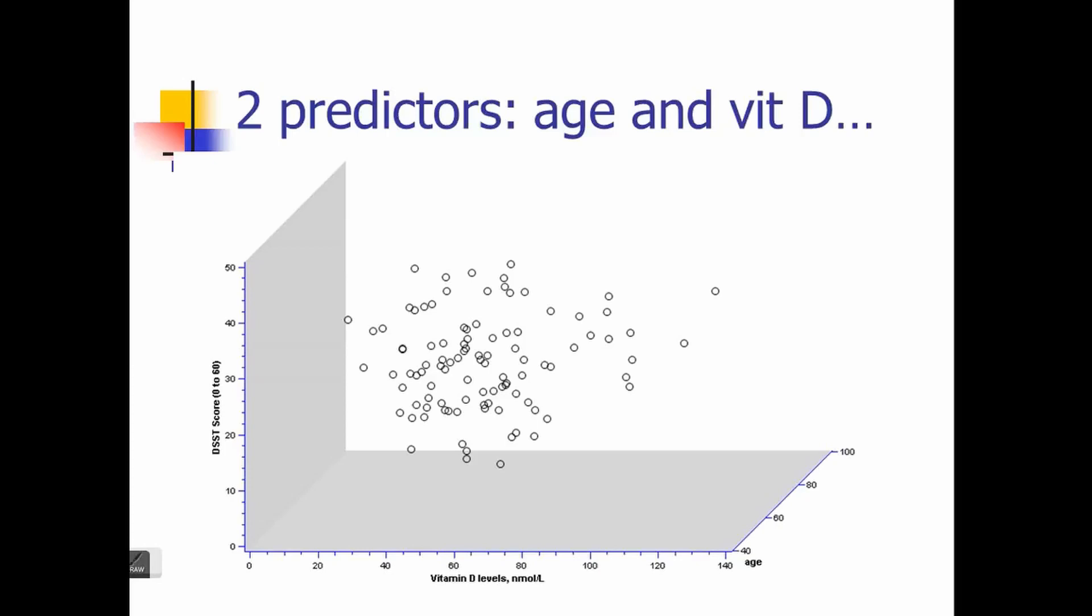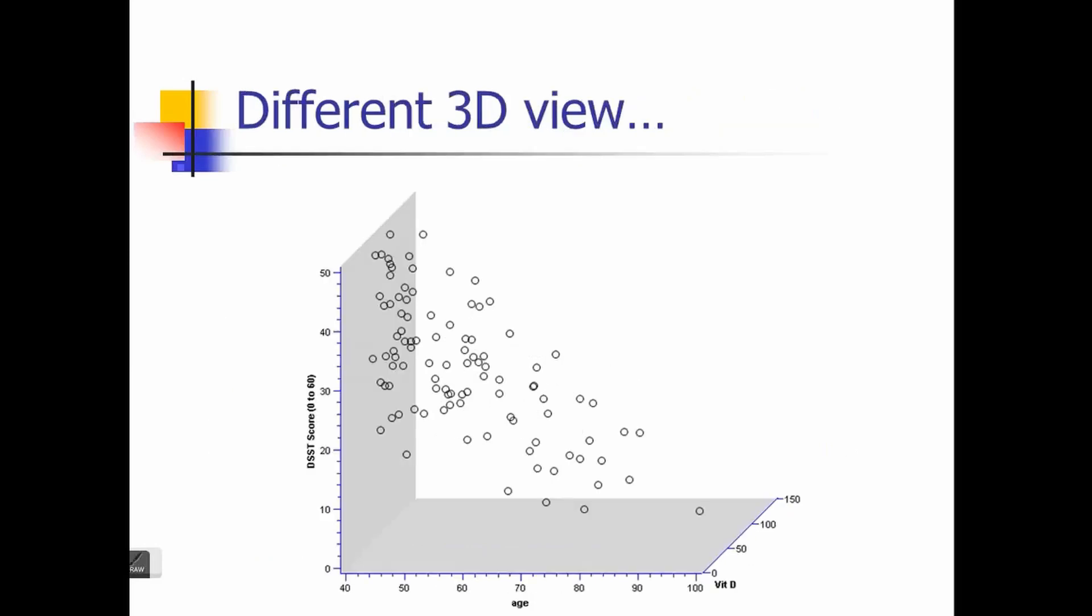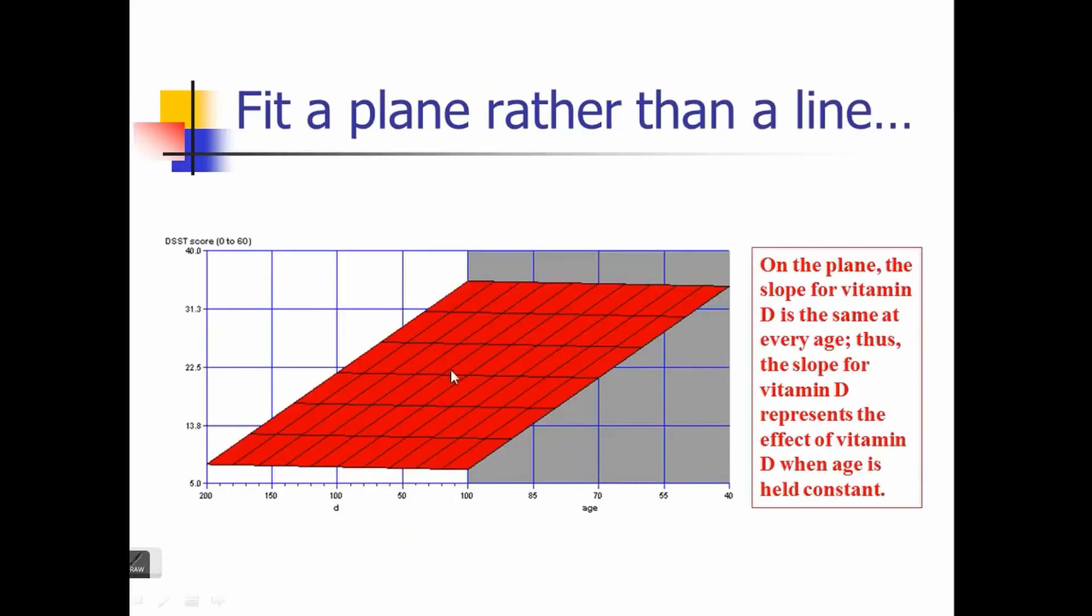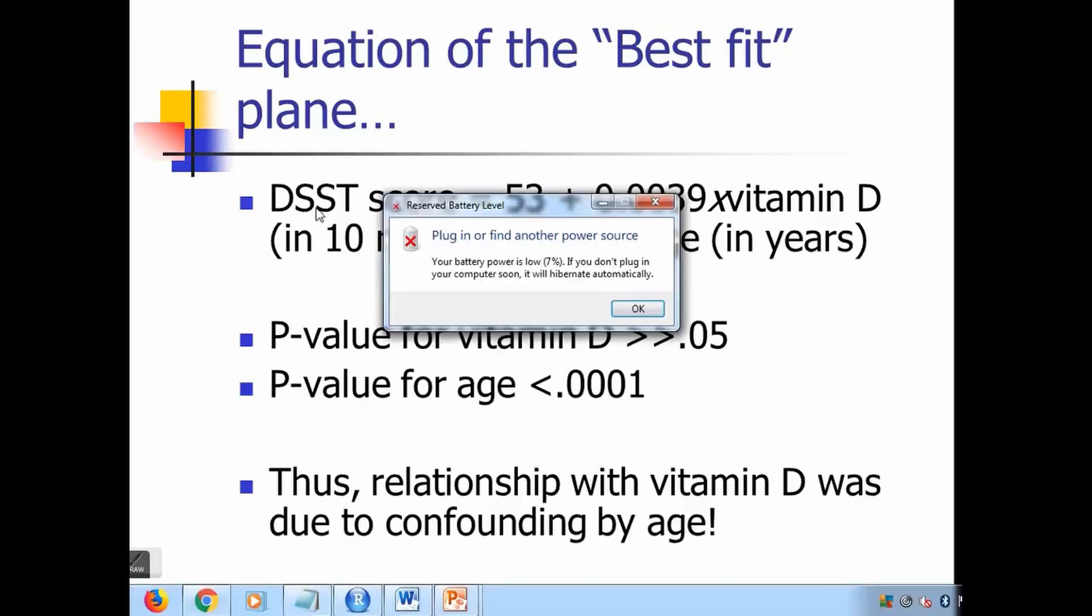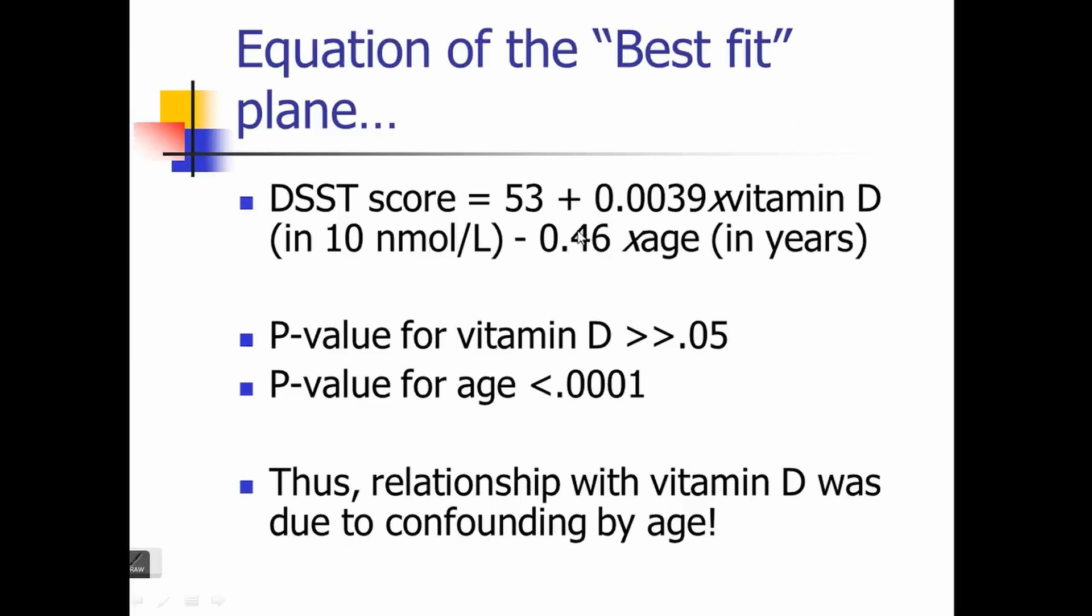If you go beyond four dimensions, you cannot represent that on a 2D plane, but up to three dimensions you can visualize. This is how it looks—instead of having just one slope parameter, you will have two slope parameters in the case of a regression plane. If you estimate that, you see there's a positive relationship with vitamin D quantity and a negative relationship with age. That means if age increases, your DSST score will likely go down, shown by the negative proportion of 0.46. If it goes up by one year, the corresponding decrease in DSST score will be 0.46.